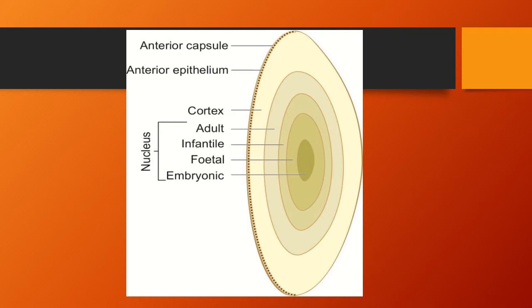The word cataract is derived from the Greek word 'cataractus' which means a waterfall. The term refers to the development of any opacity in the lens or its capsule. Cataract occurs either due to formation of opaque lens fiber — congenital and developmental — or because of the degenerative process leading to opacification, i.e., acquired cataract. Cataract is the leading cause of blindness worldwide.